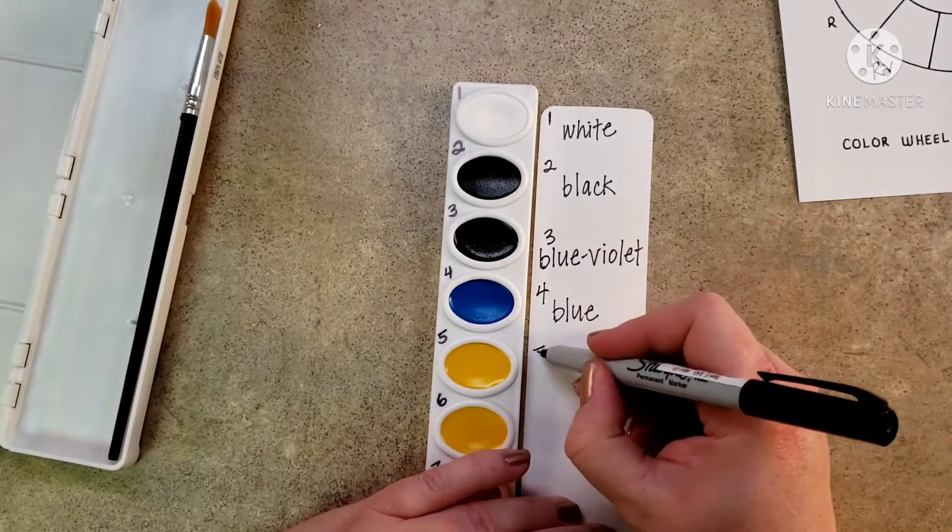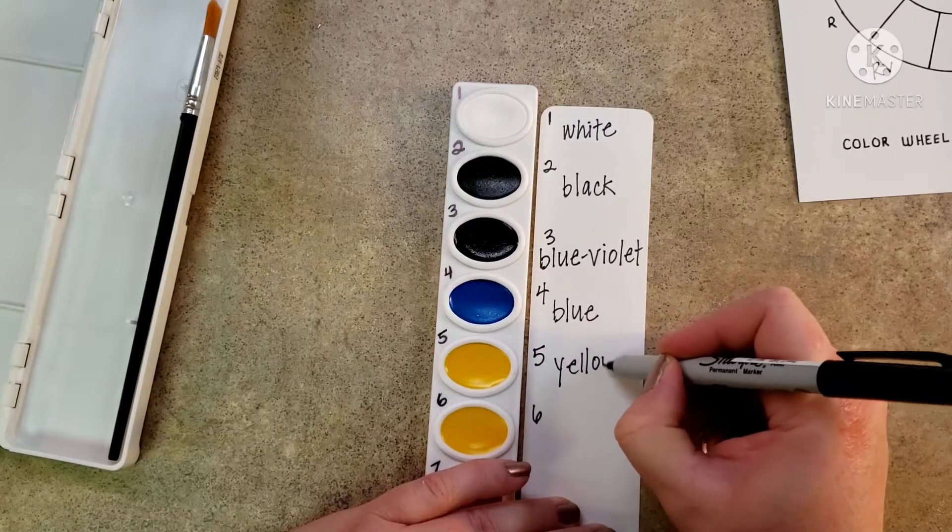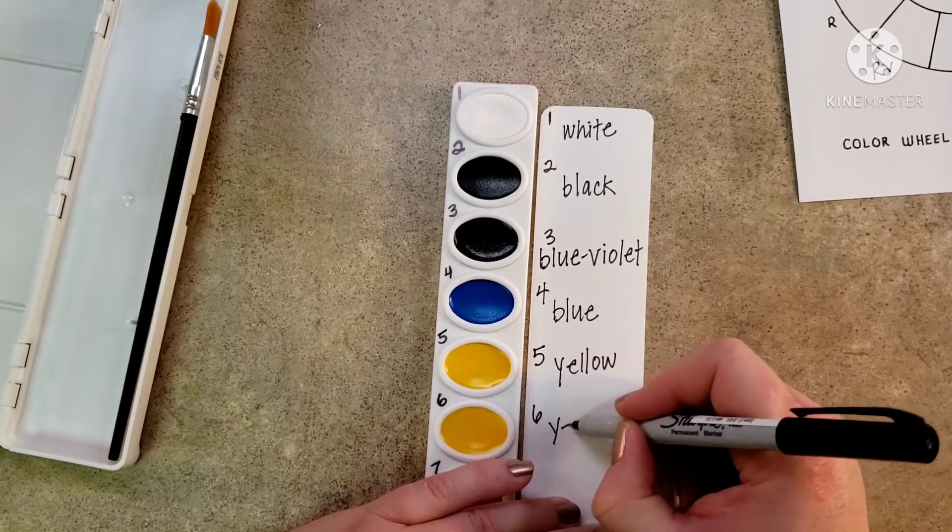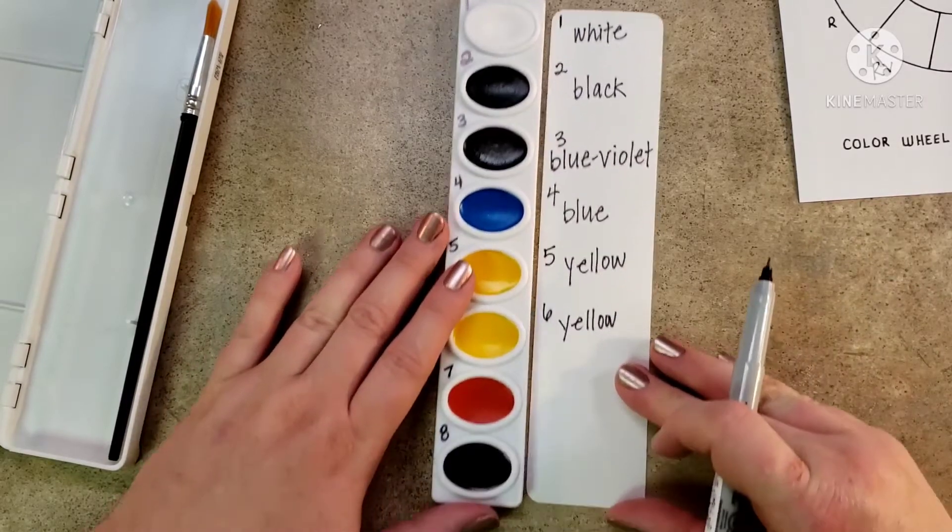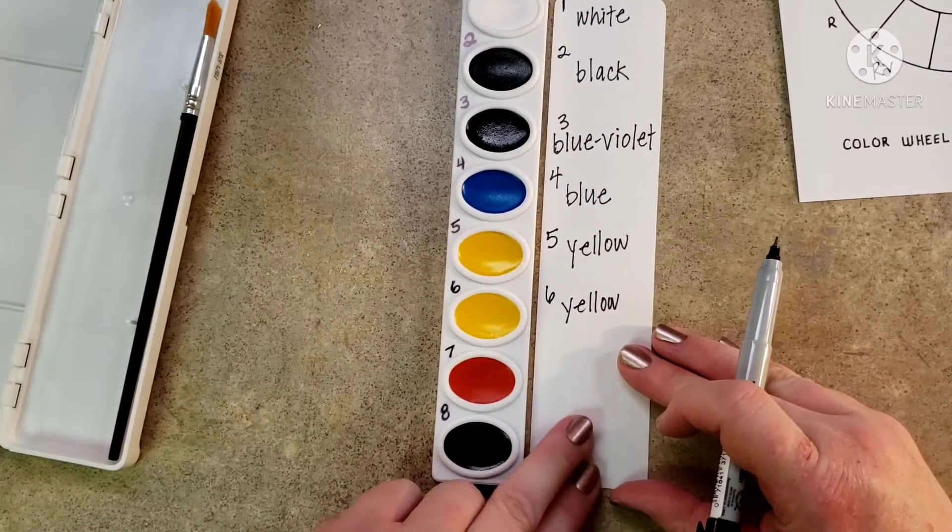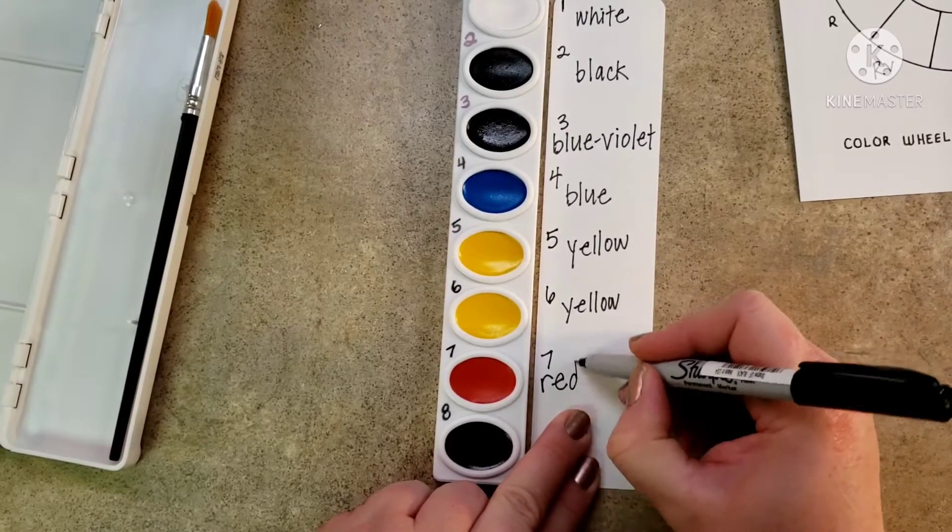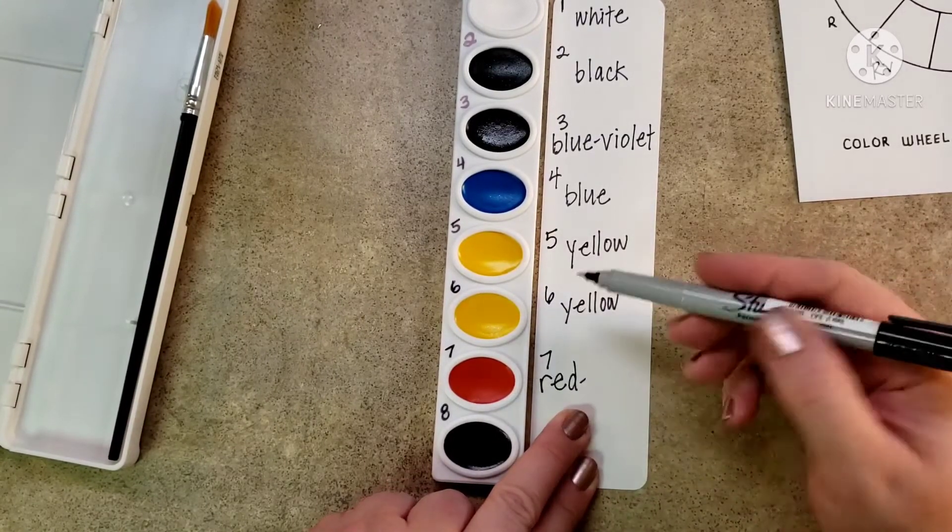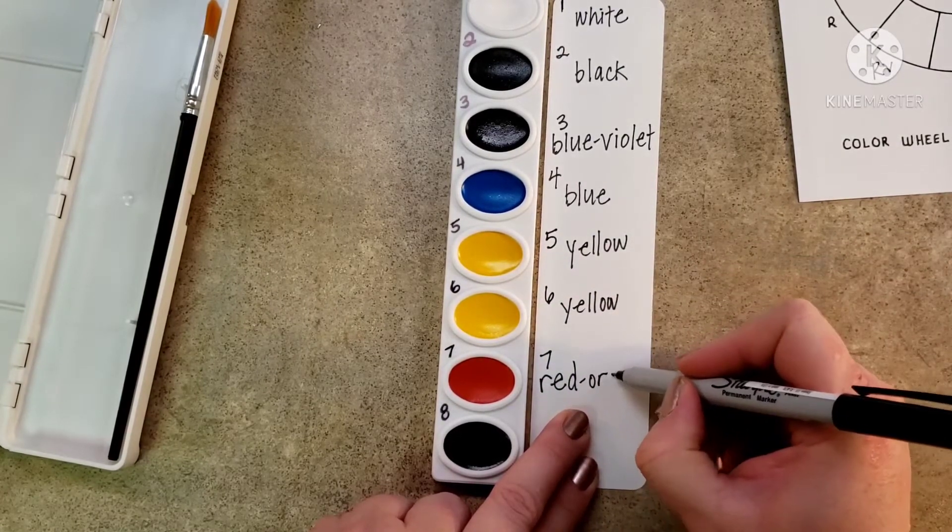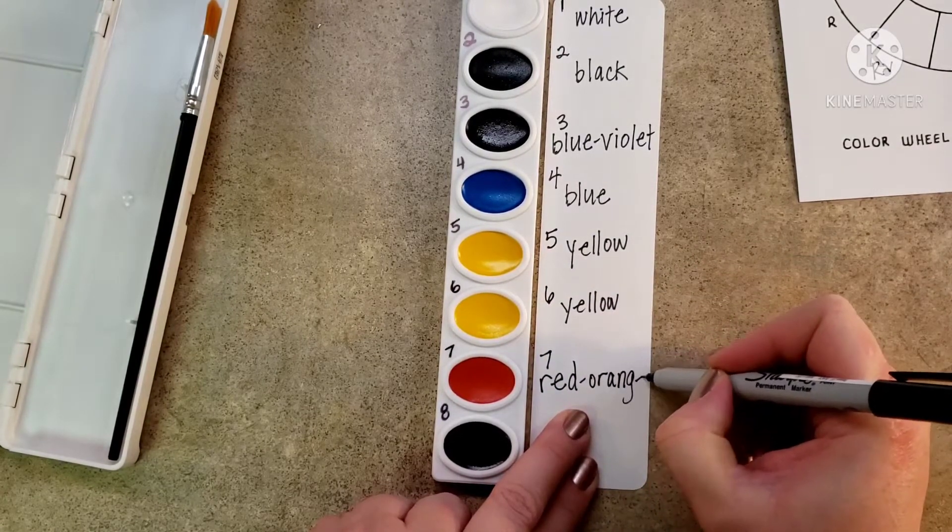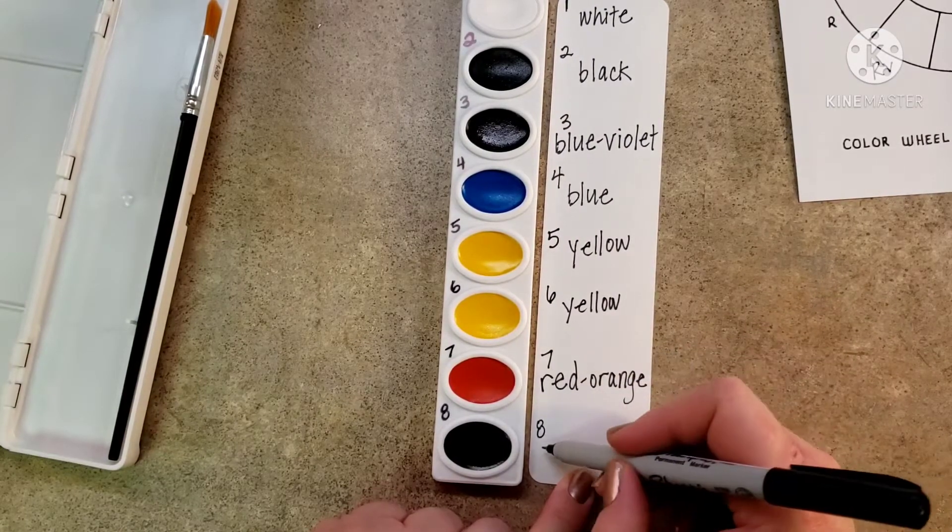Five and six are both the same, they are both yellow because you use yellow a lot to make other colors. And then seven and eight: seven is red orange, it looks like a dark orange. This is called red orange. And then number eight is red violet.